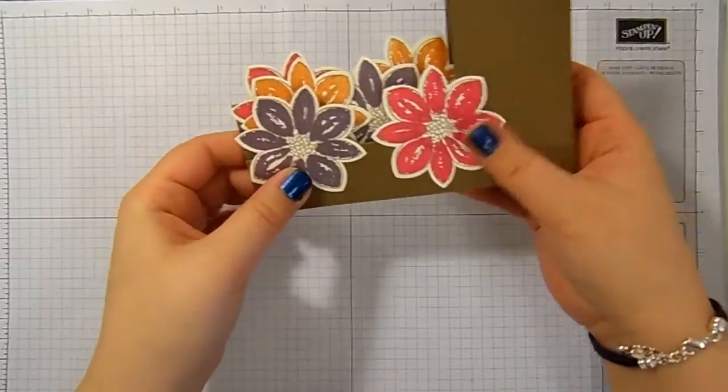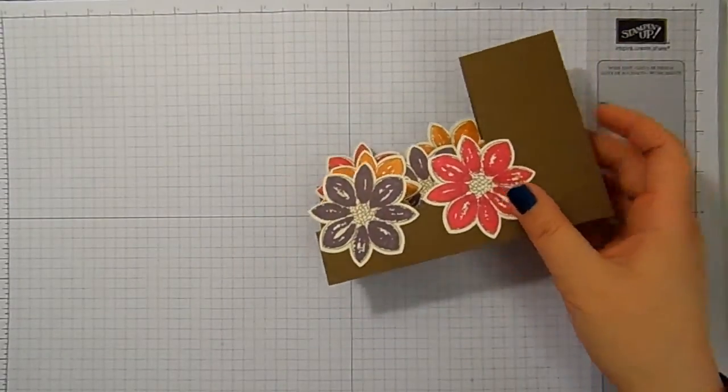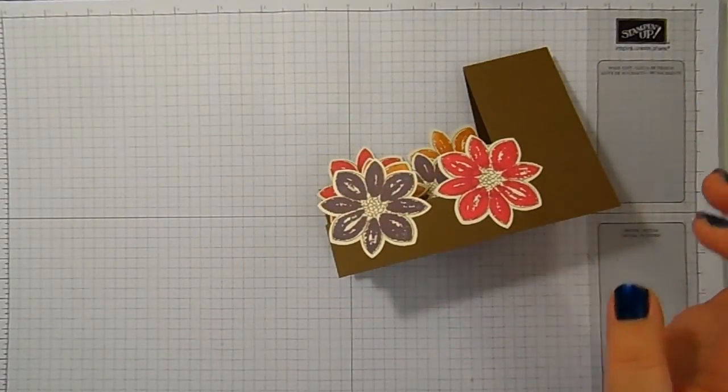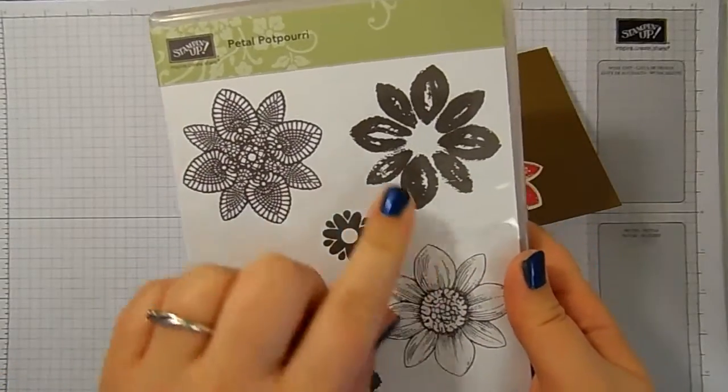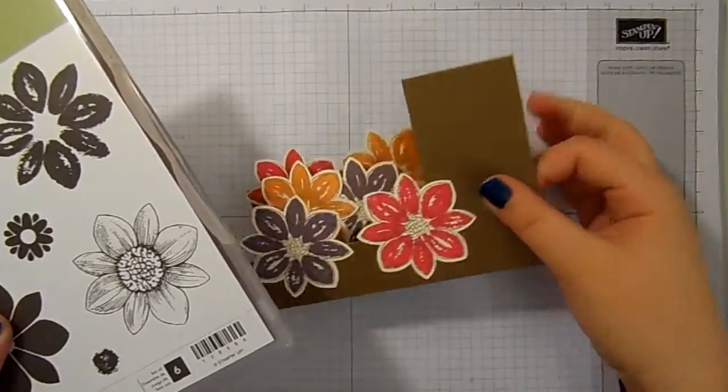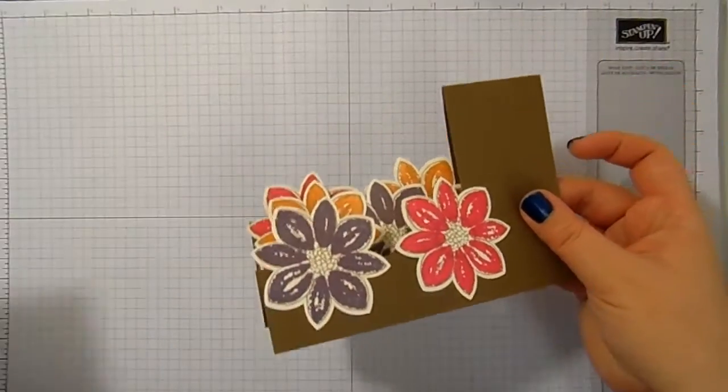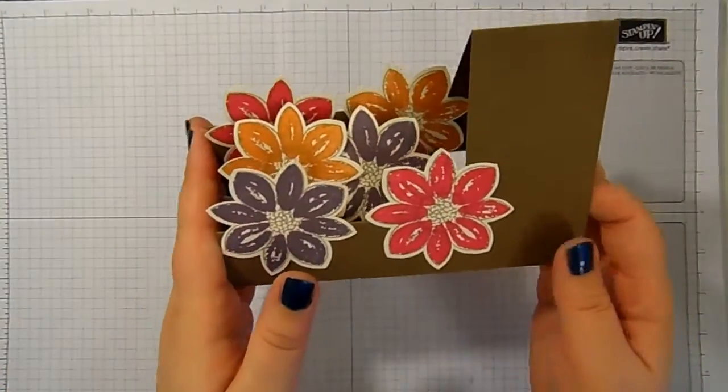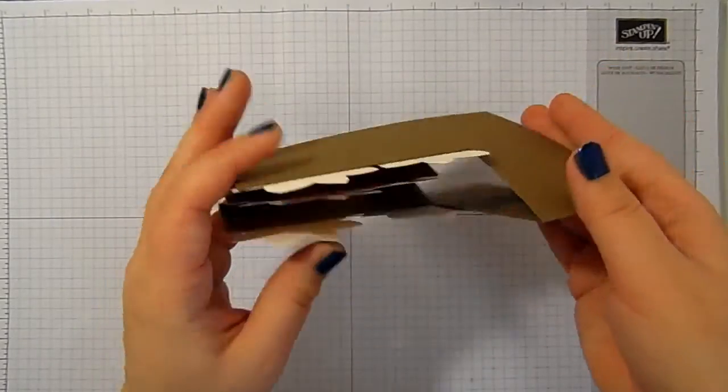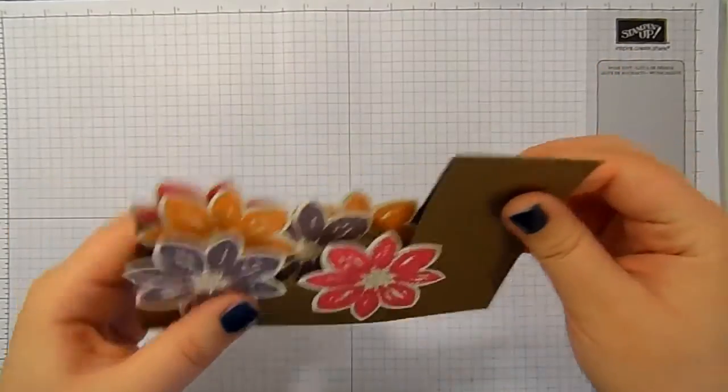This is my sidestepper card and it uses the Petal Potpourri stamp set. We're going to use this flower and this one here to get this layered look, and I'm going to show you how to do that using the Stamper-ma-jig. But first of all, I thought I would show you how I put the sidestepper together.